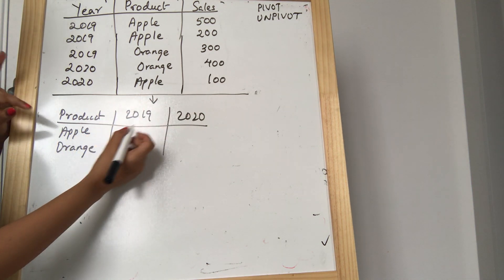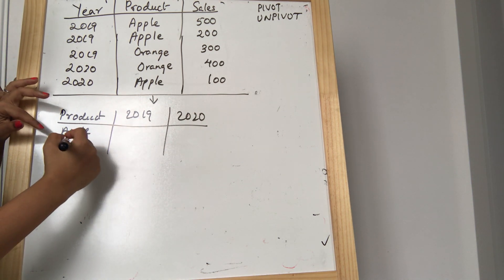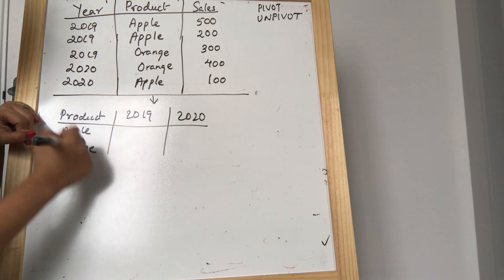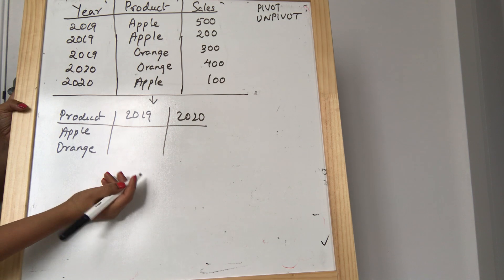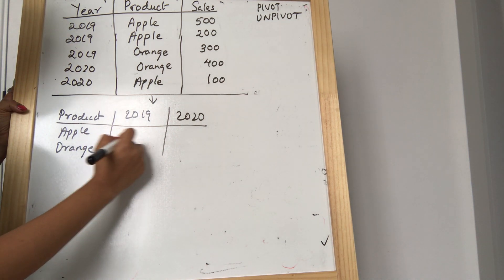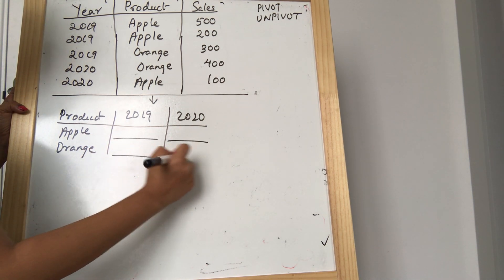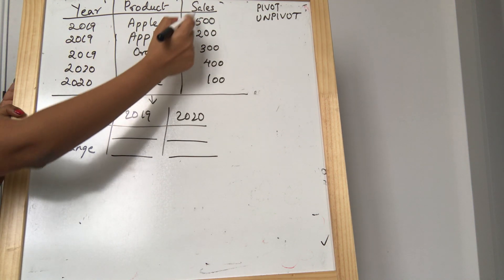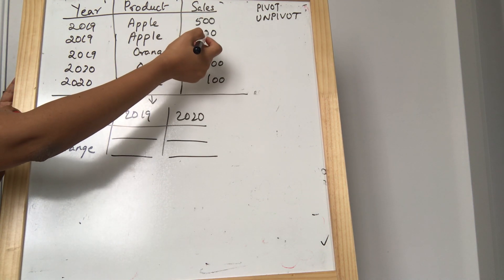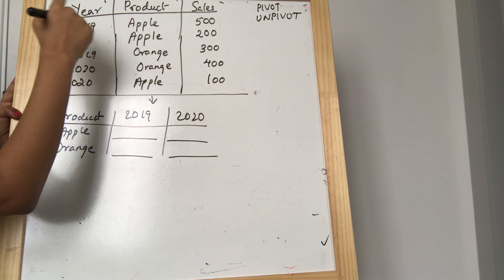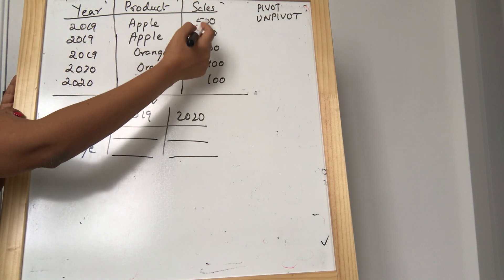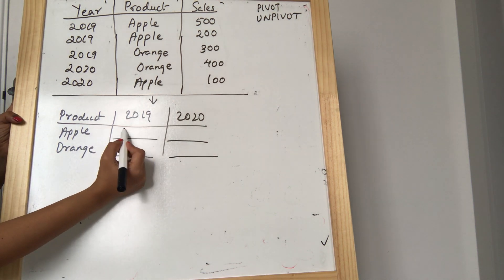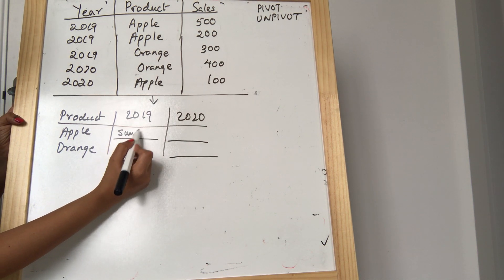I want the sales of apple for 2019, and the sales of orange for 2019, and the sales of apple and orange for 2020. What I actually want is the sum of sales. In 2019 I can see apple sales are 500 and 200, so the total sales of apple for 2019 is 500 plus 200, which is 700. So I want the total — that is the sum of sales.